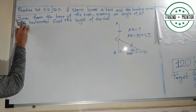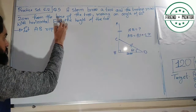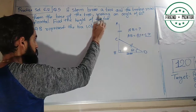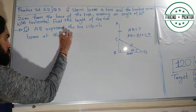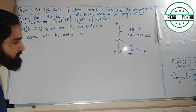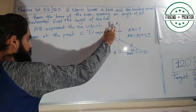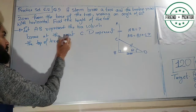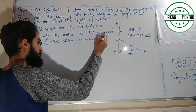In the solution we write: the tree broke at point C, and D represents the top of the tree after breaking. So the detail is noted and we proceed.